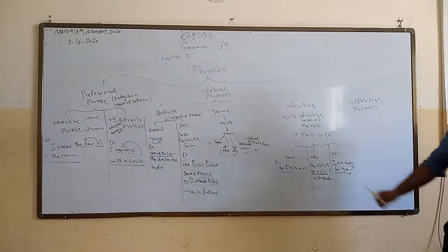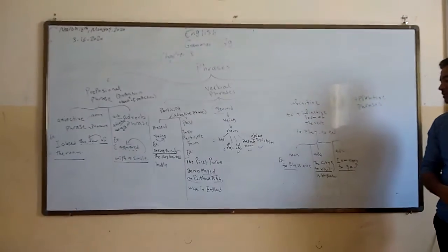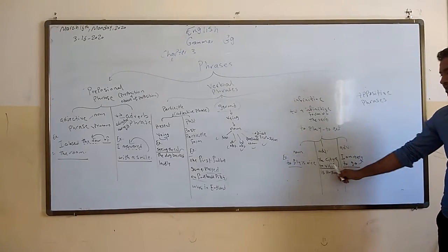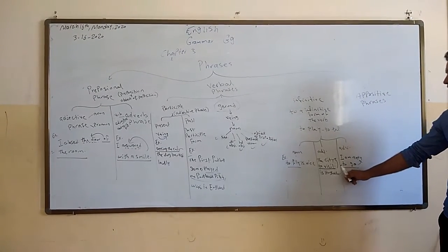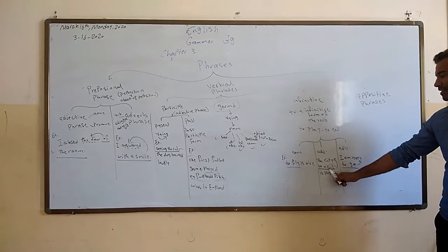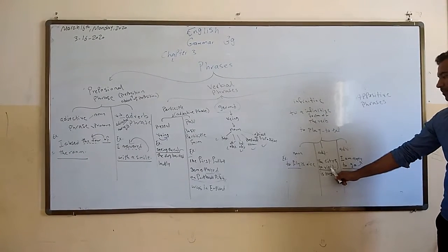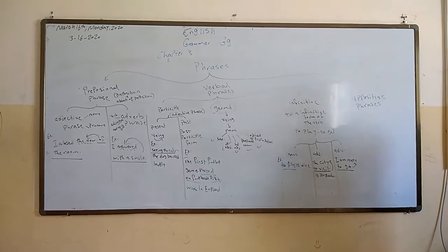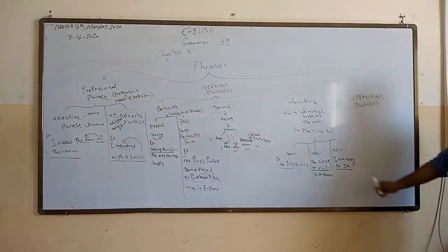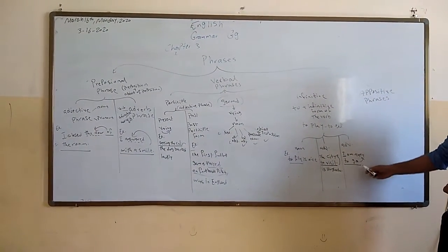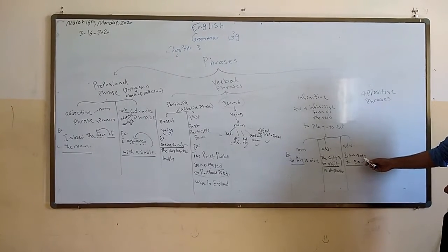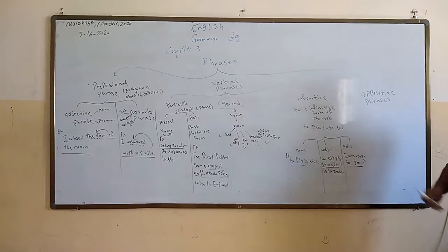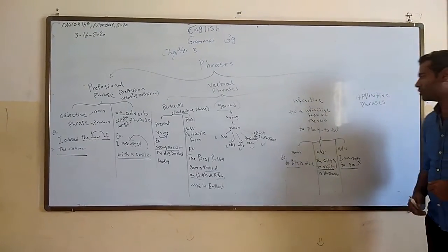The second infinitive function is as an adjective. For example, 'The city to visit is organic.' Here 'to visit' is the infinitive and it describes the city, so it works as an adjective — an infinitive adjective phrase. The third function is as an adverb. For example, 'I am ready to go.' Here 'to go' describes or modifies 'ready,' which is an adjective. So 'to go' modifies the adjective, making it an adverb.